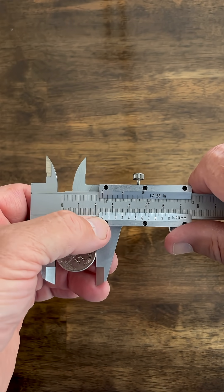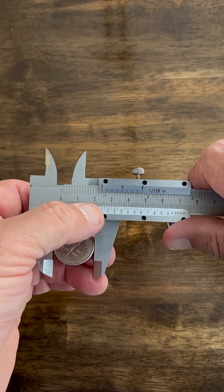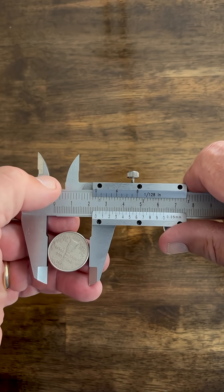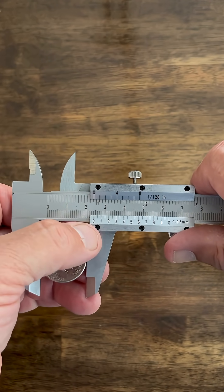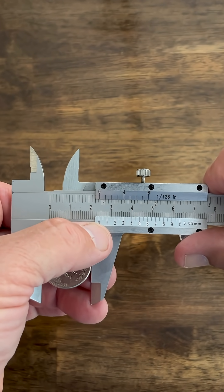And then I look on this scale where the zero line crosses. So there's my millimeter scale, inches on top, and the zero line goes a little bit past the four.